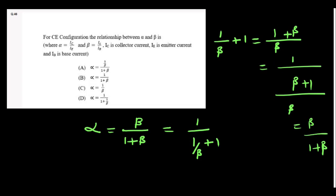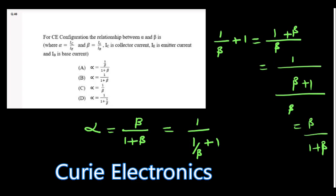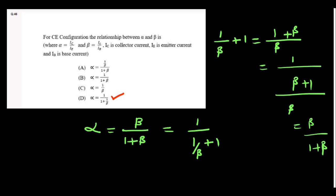For CE configuration, the relation between alpha and beta: alpha equals beta divided by (1 + beta). Simplifying, this equals 1 divided by (1 + 1/beta). If you take the LCM and solve, you get back beta upon (1 + beta). Option D is the answer.